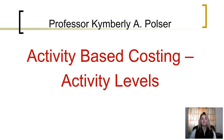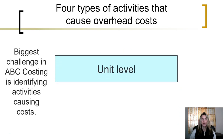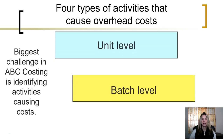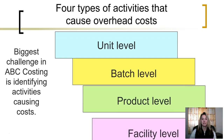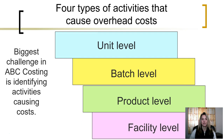In this segment, we're going to look at different activity levels within activity-based costing. When a company is trying to allocate indirect costs, it needs to identify the different activities that are causing those costs. The biggest challenge in applying activity-based costing is identifying those activities. In order to do that, a company needs to identify four types of activities that cause overhead costs: unit-level activities, batch-level activities, product-level activities, and facility-level activities.